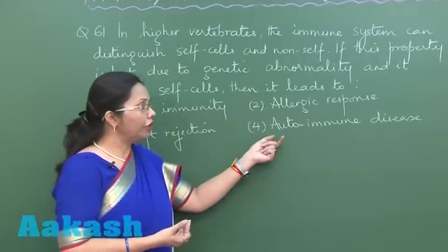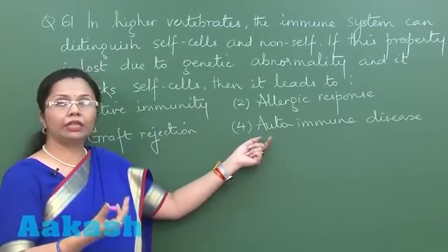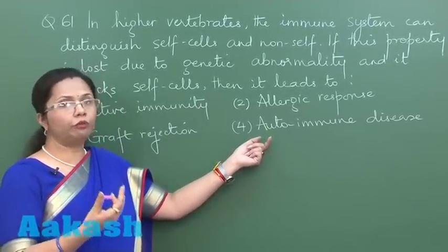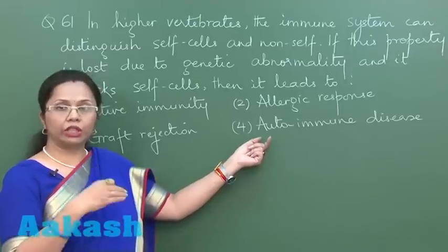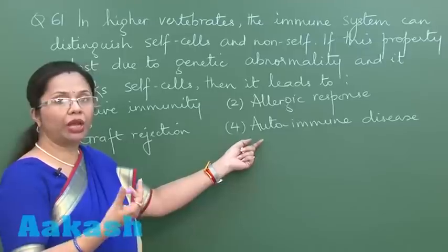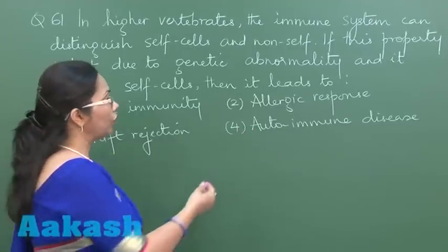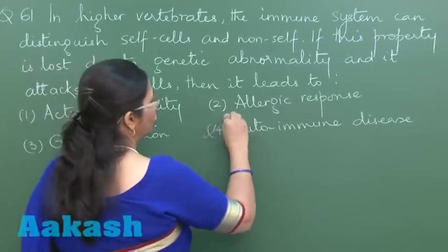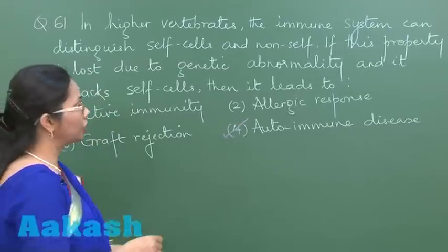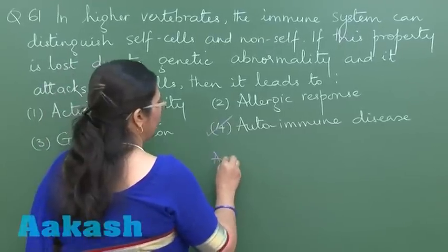Autoimmune disease is when immunity is directed against self. So if the immune system is not able to distinguish between self and non-self, it can start reacting against our own cells. So autoimmune disease would be the result, and that's the answer for this question — option 4.